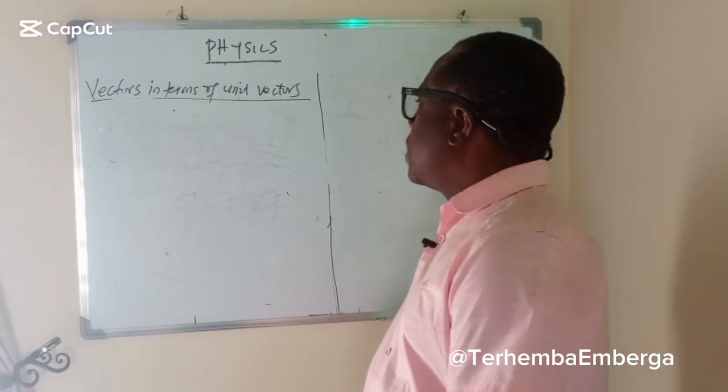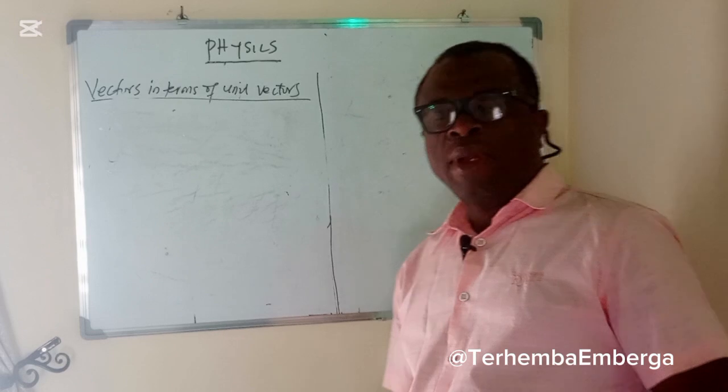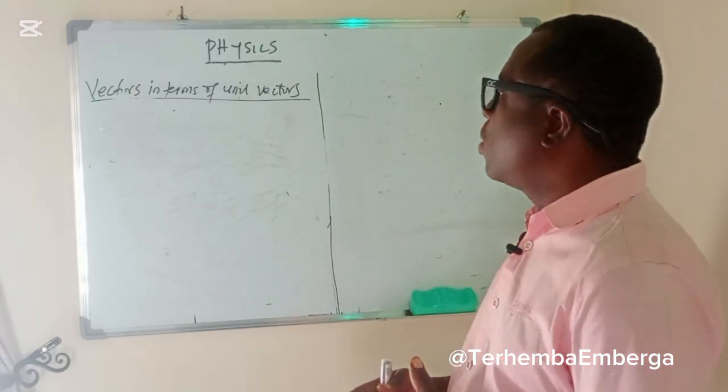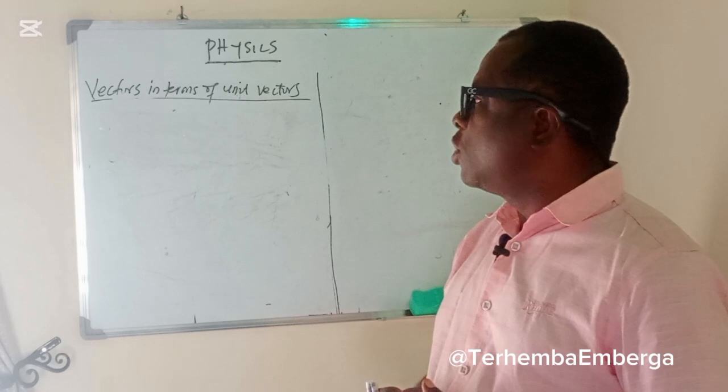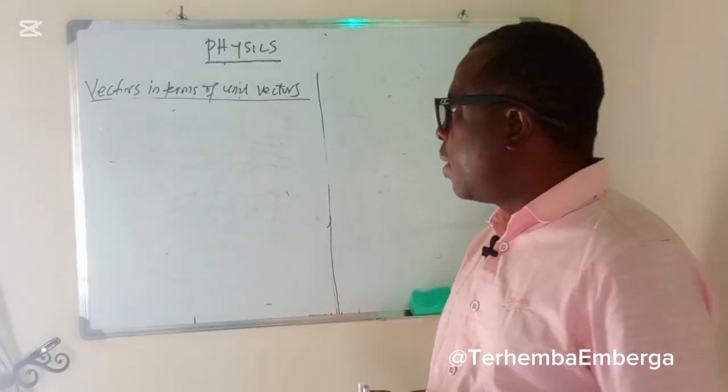Today we'll be looking at vectors in terms of unit vectors. A vector is that quantity that has both magnitude and direction, whereas the scalar is that which has only magnitude without direction.